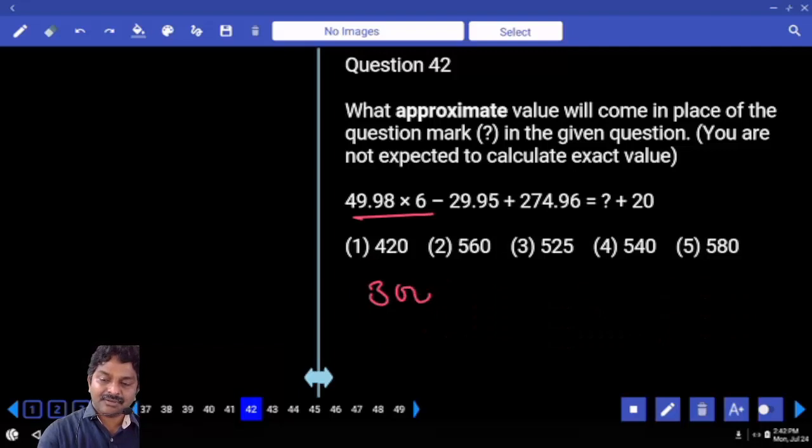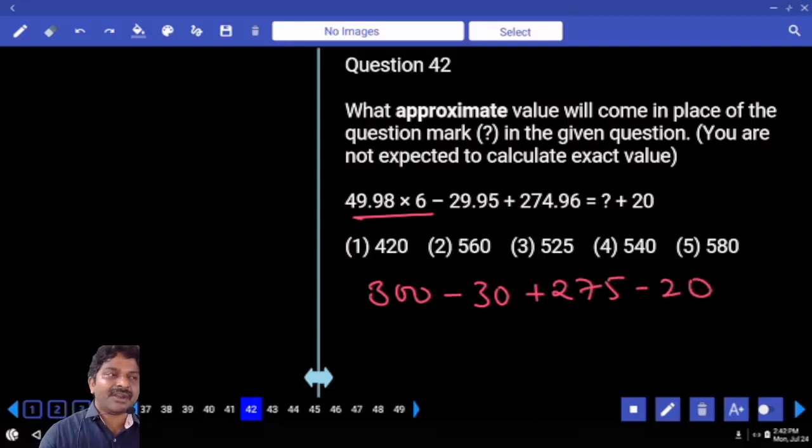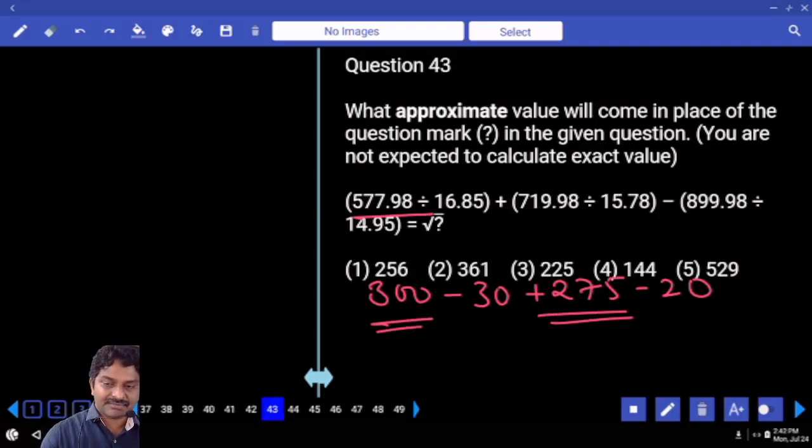Tell me, 50 into 6 minus plus, and right-handed fellow comes to this time. How much do you need to subtract? 50 subtracted from 275 equals 225 plus 300. Third option, next.